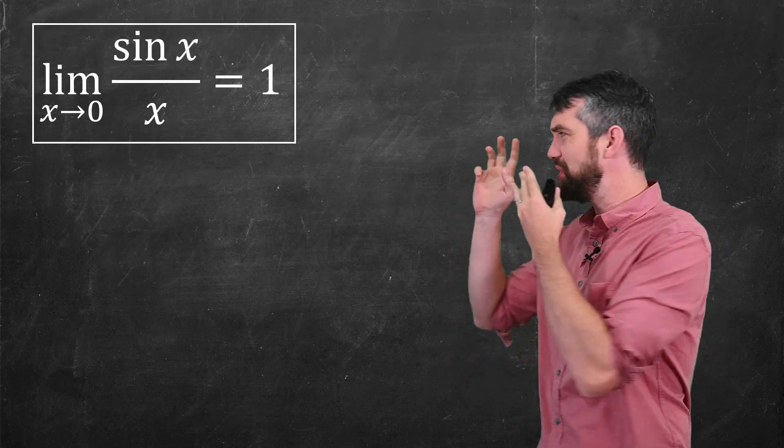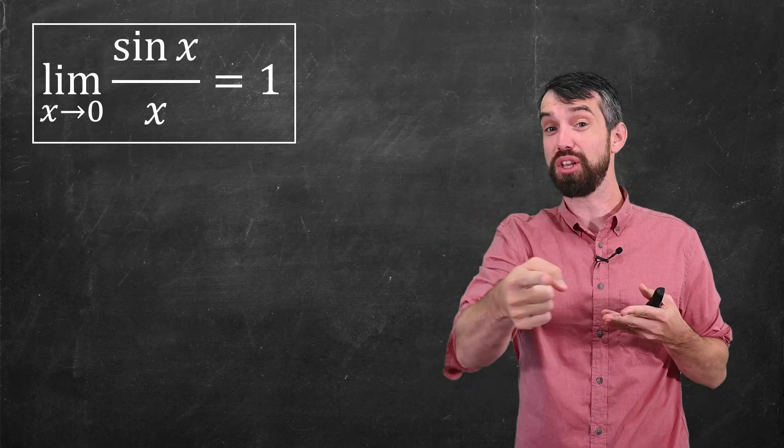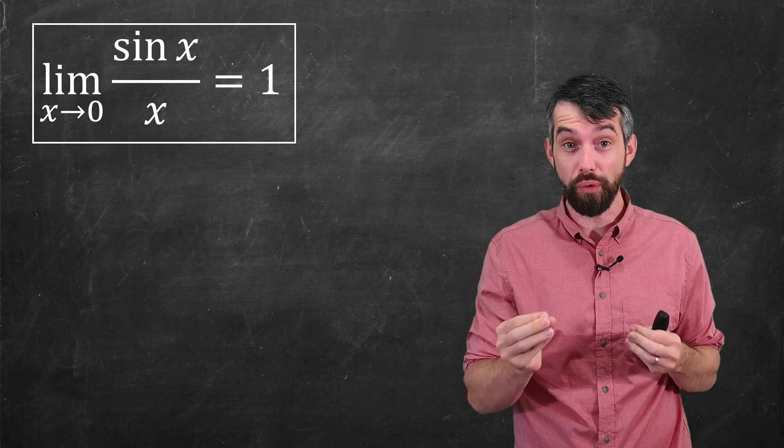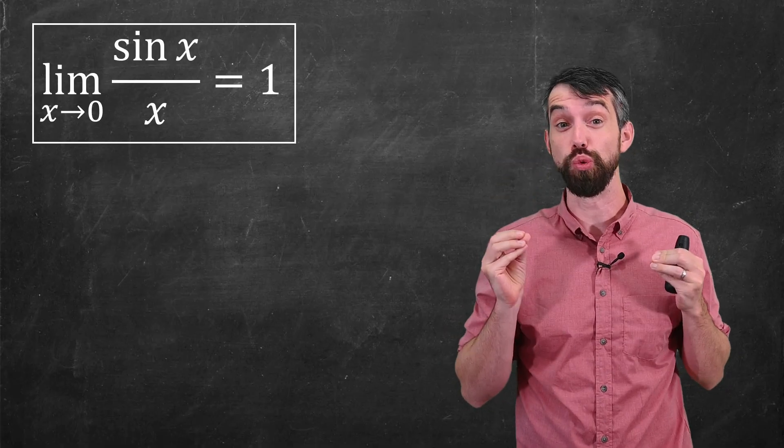Today we're going to investigate this limit. The limit as x goes to zero of sine of x over x, that's actually equal to one.